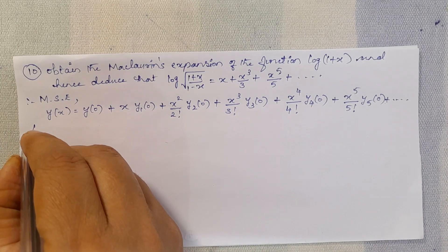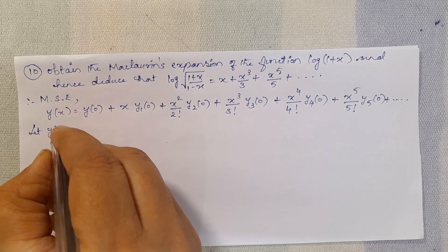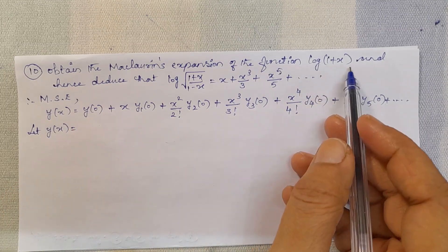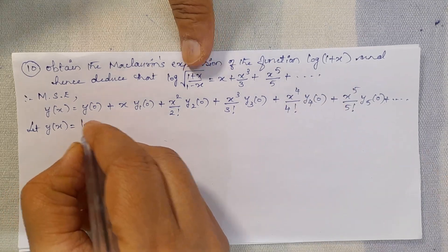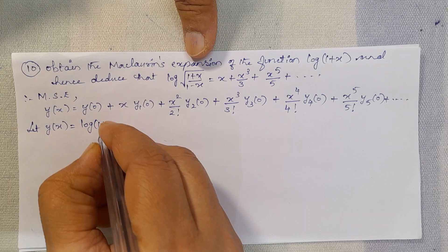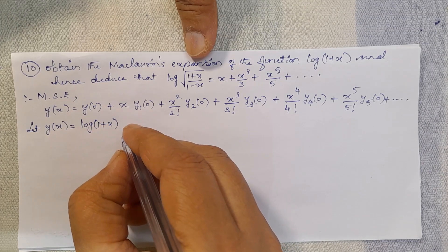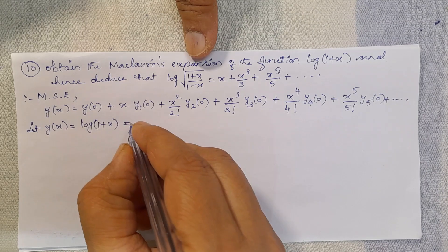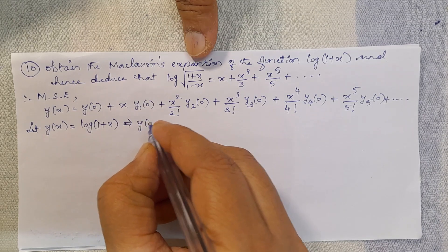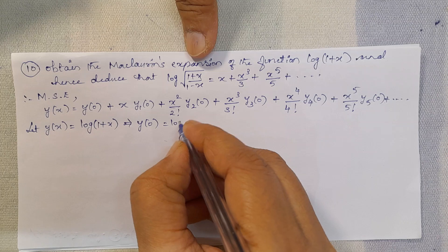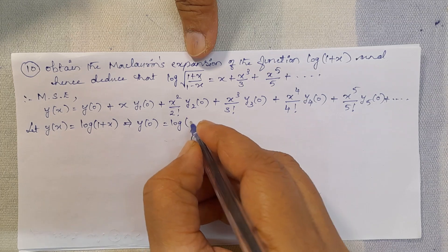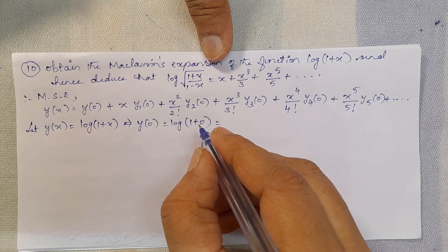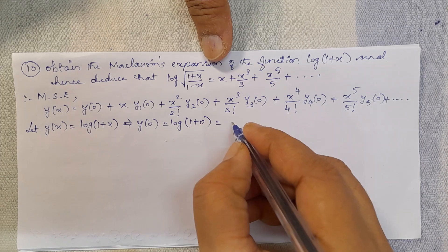Here y(x) = log(1 + x). So y(0) = log(1 + 0) = log(1) = 0.